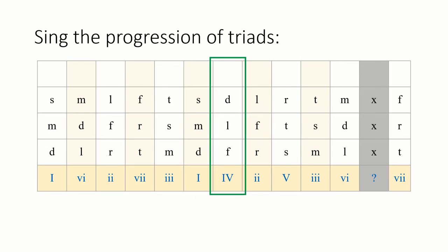Fa la do la fa, four major. Re fa la fa re, two. Sol ti re ti sol, five major. Mi sol ti sol mi, three minor. La do mi do la, six minor. Ti re fa re ti, seven diminished.